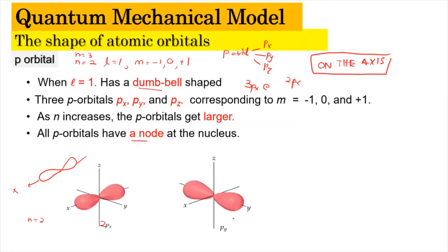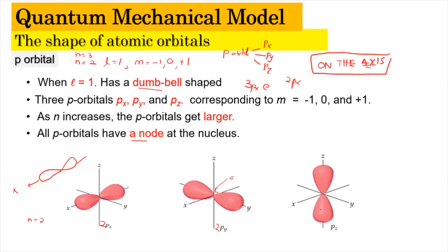For 2Py, the dumbbell shape lies along the Y axis, with a node in the middle separating the two lobes. The node is the point where the two halves of the dumbbell separate. For 2Pz, the lobes lie along the Z axis, again separated by a node at the nucleus. Remember: always draw the dumbbell on the corresponding axis.